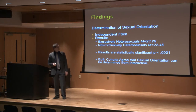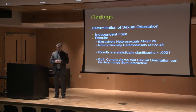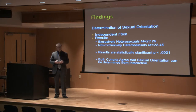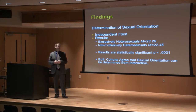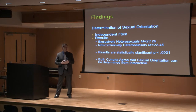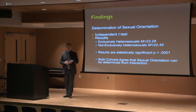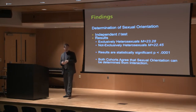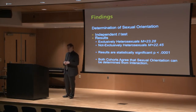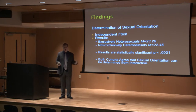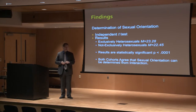For the findings, we first wanted to determine if the cohorts believe that sexual orientation can be determined from interaction. We conducted an independent t-test, and the results show that exclusively heterosexuals do orient to sexual orientation. Non-exclusively heterosexuals also believe they can determine it from interactions, although scores differ somewhat. The results are statistically significant at the .001 level — 99.99% of the results did not occur by chance. Basically, both cohorts agree that they can determine the sexual orientation of another individual within ordinary interactions.